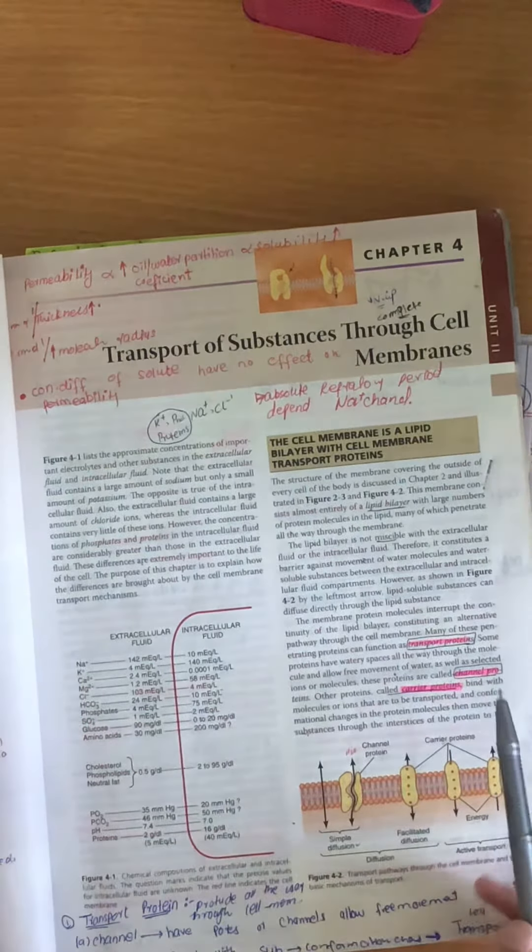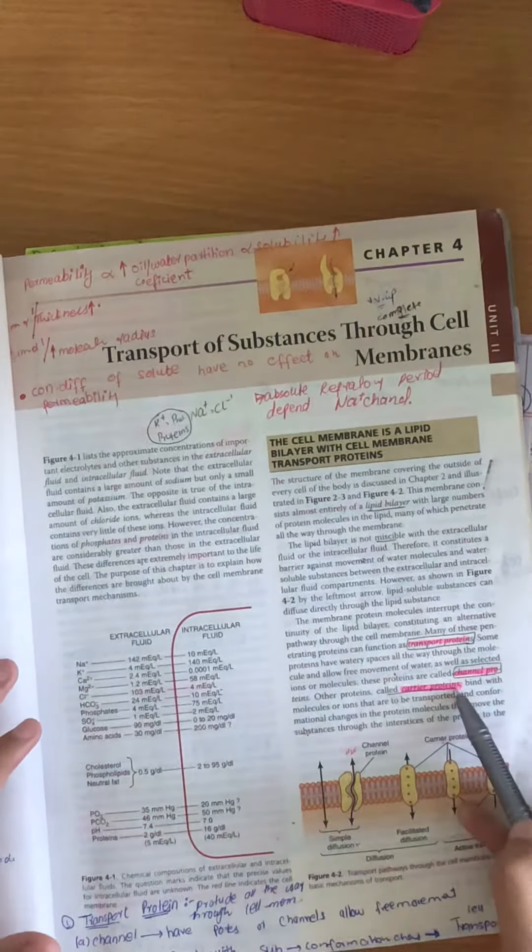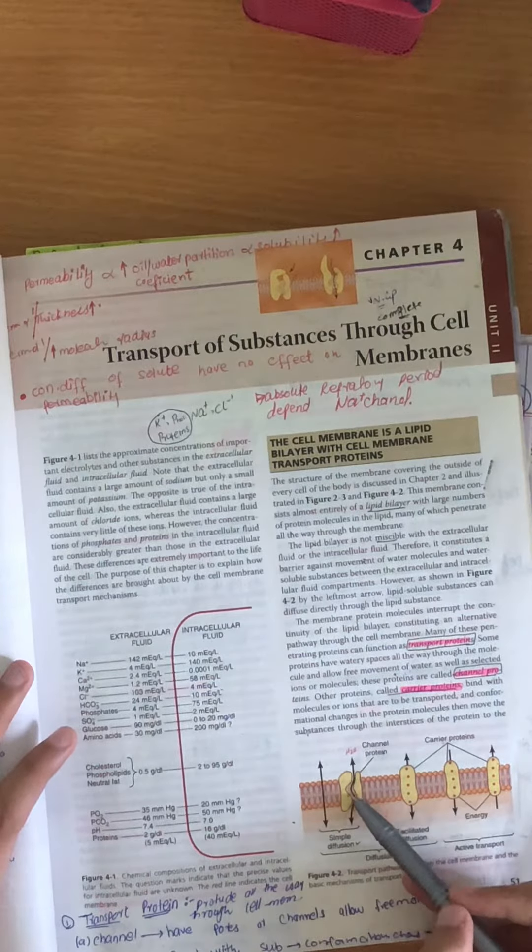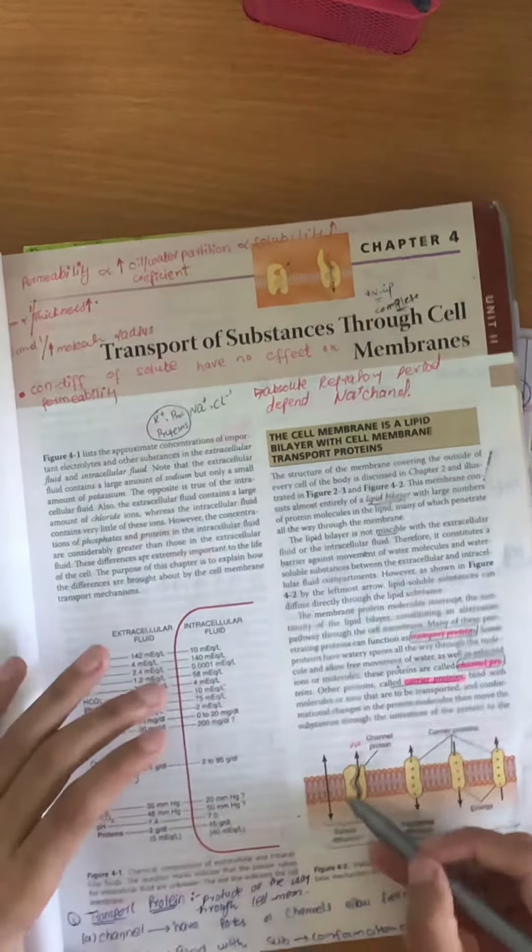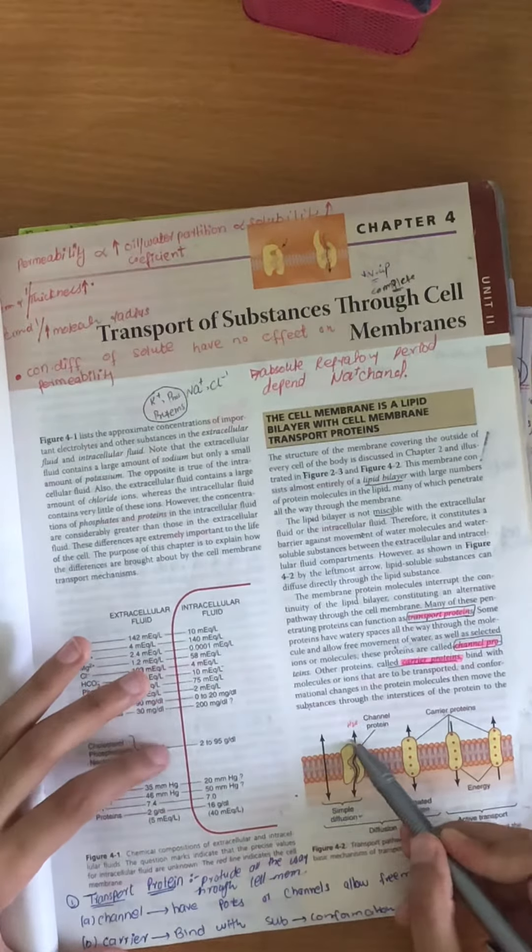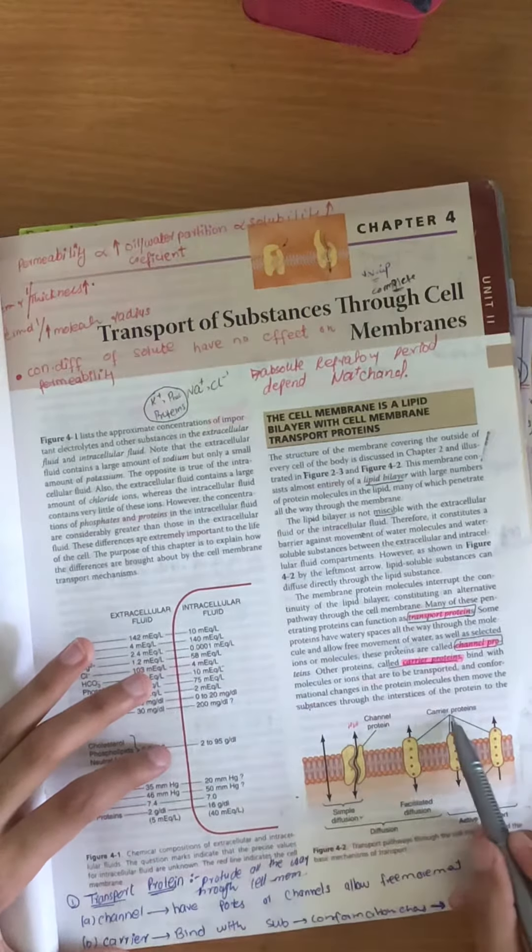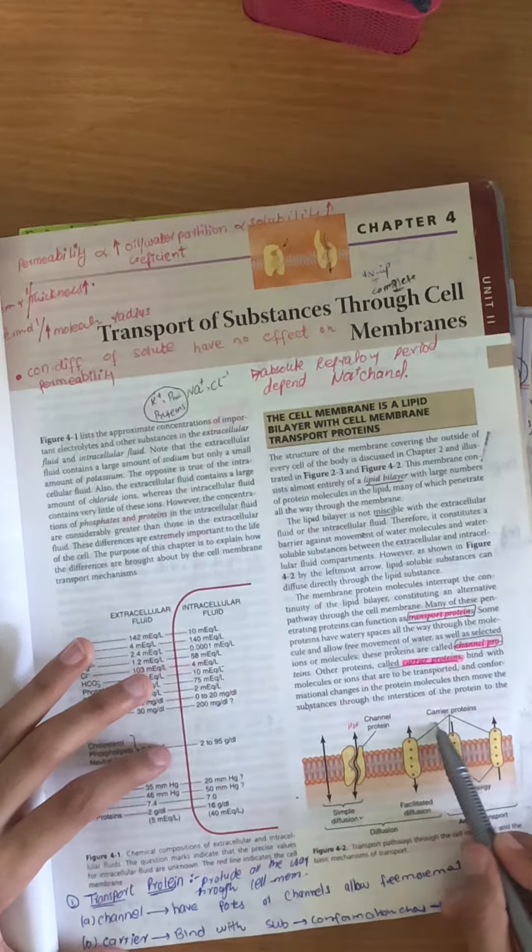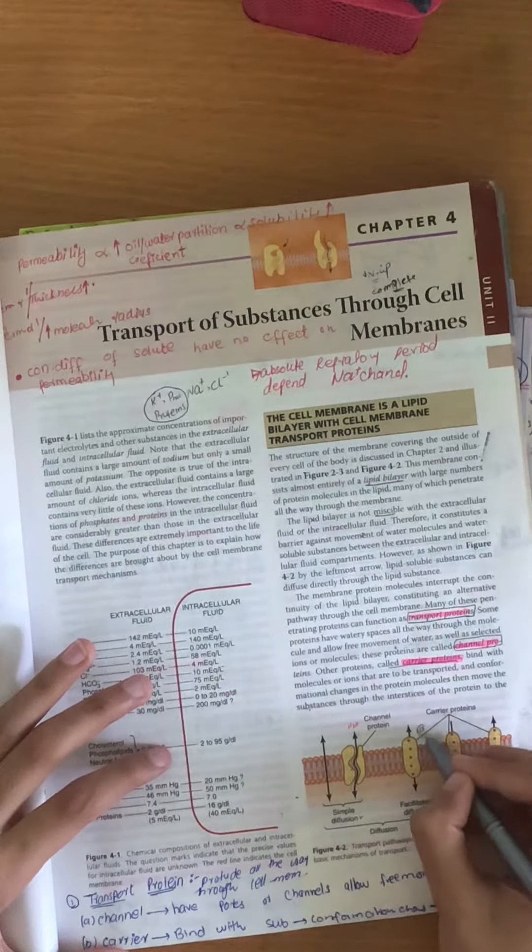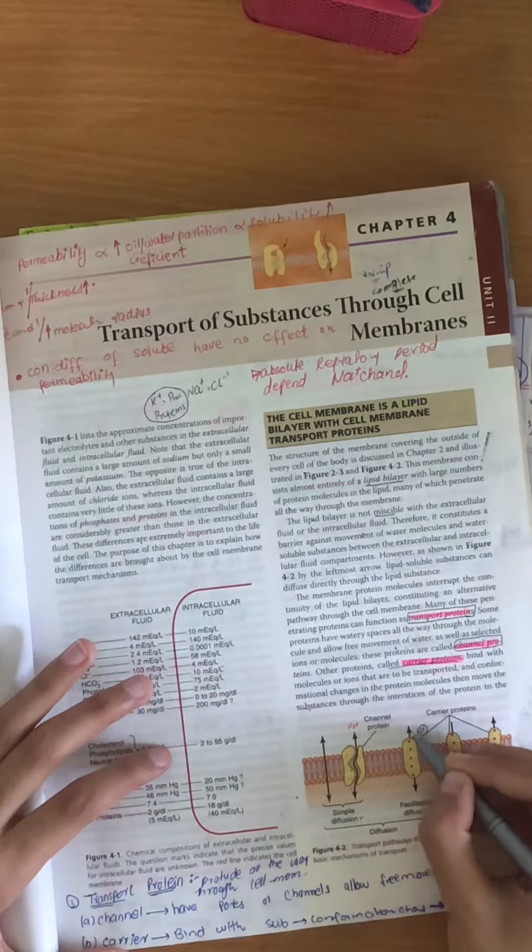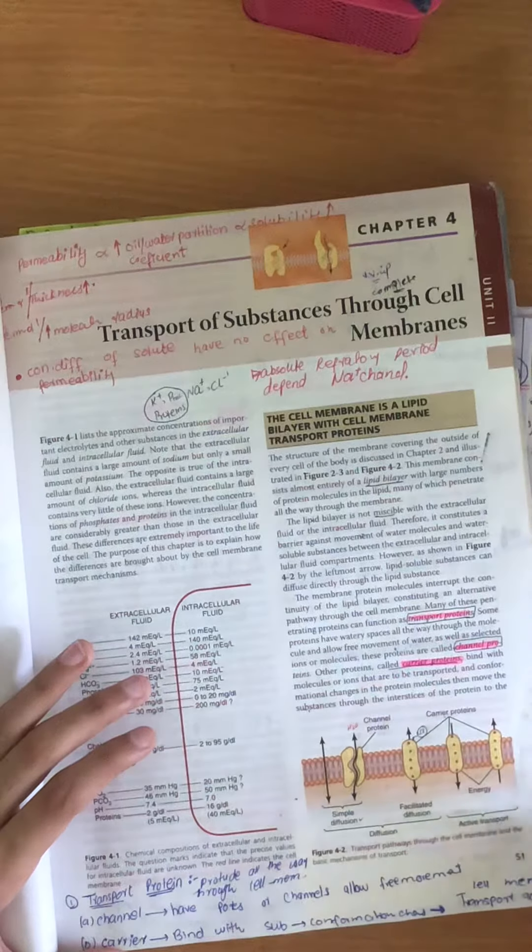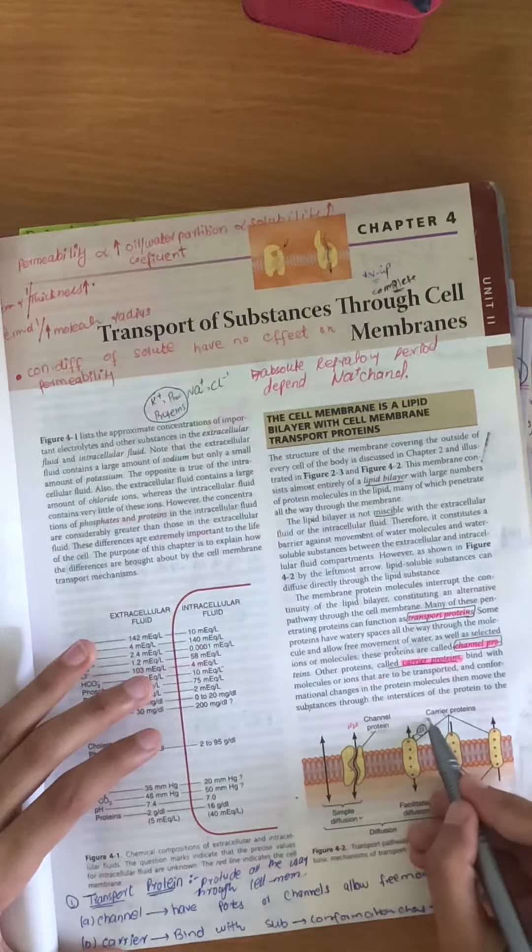First of all, on the first page, you should know what are carrier proteins and channel proteins. Channel proteins have a pore that provides free movement. Whereas carrier proteins work differently - a substance will bind with them, like sodium binding, then it will change the structure and transport it. These are channel proteins and carrier proteins.